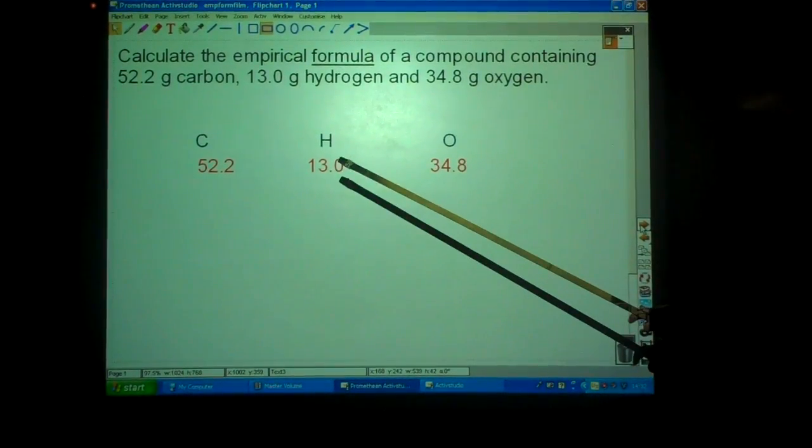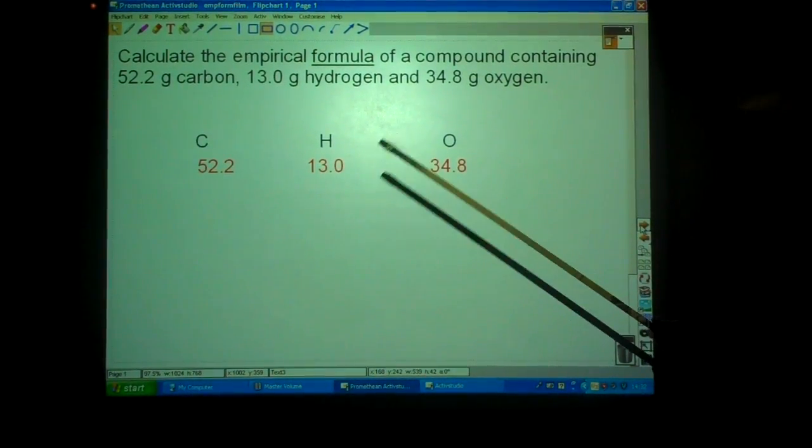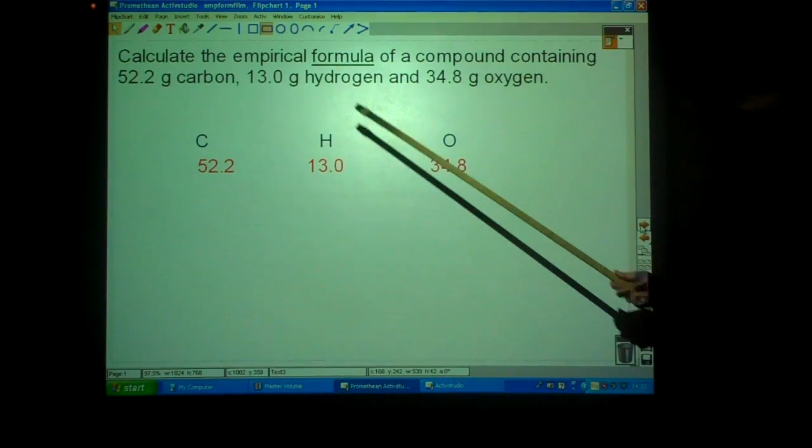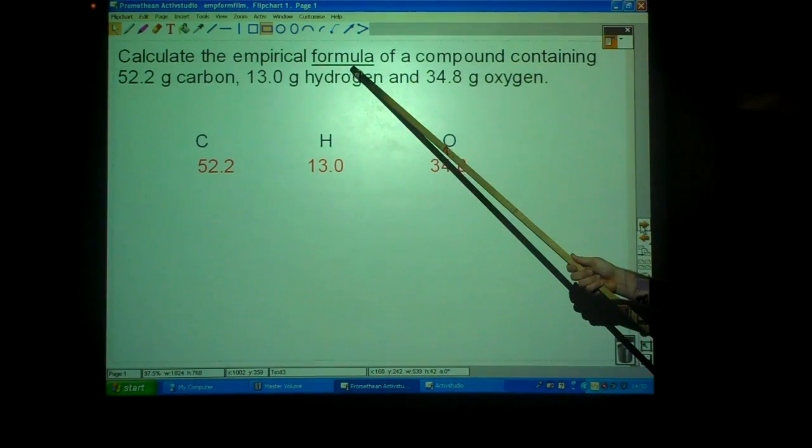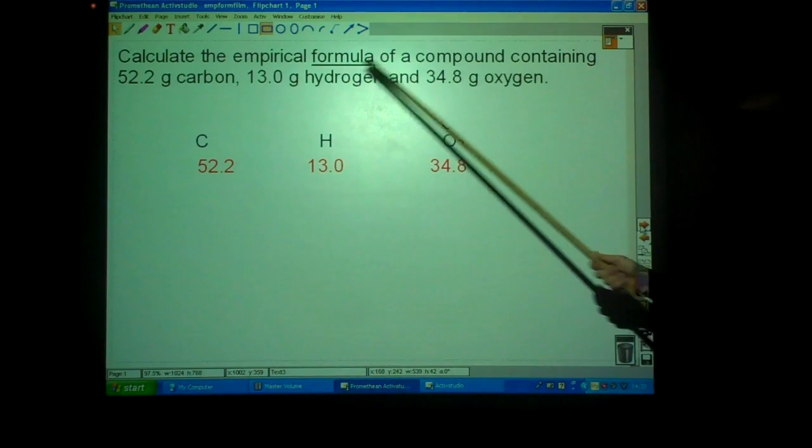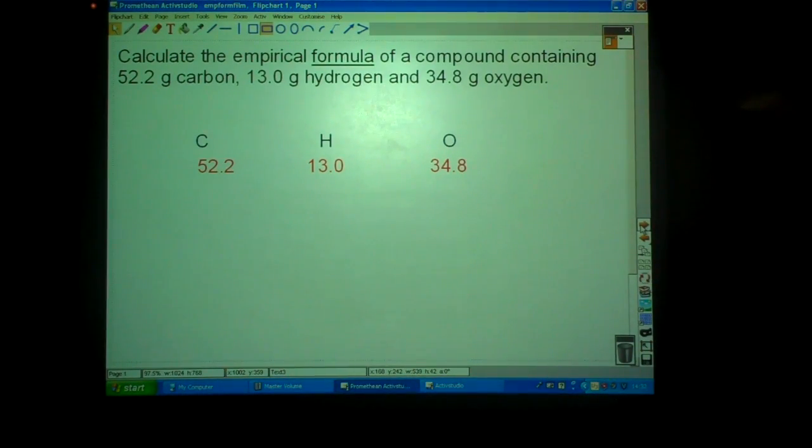The empirical formula is the simplest ratio of atoms in a compound. In the exam, you'll notice an empirical formula question because it will have the word formula and it will give you the masses of the number of compounds in it. It will also give you the masses from the periodic table.